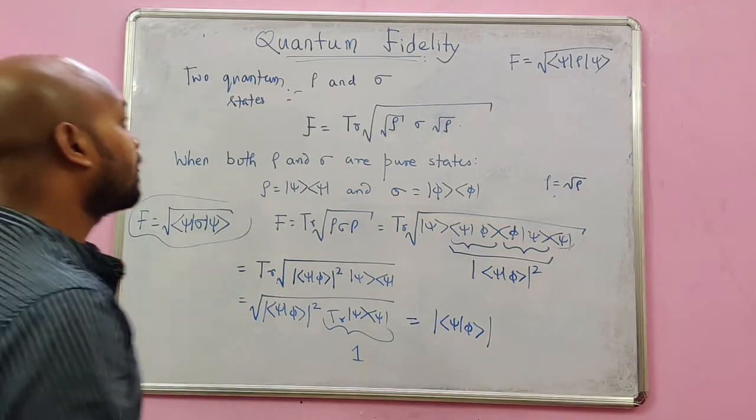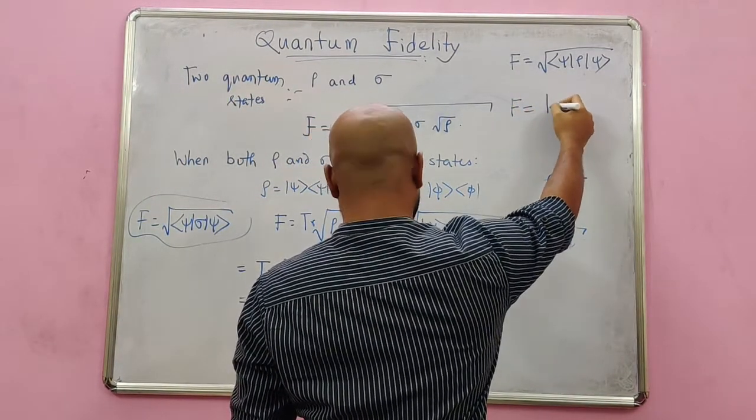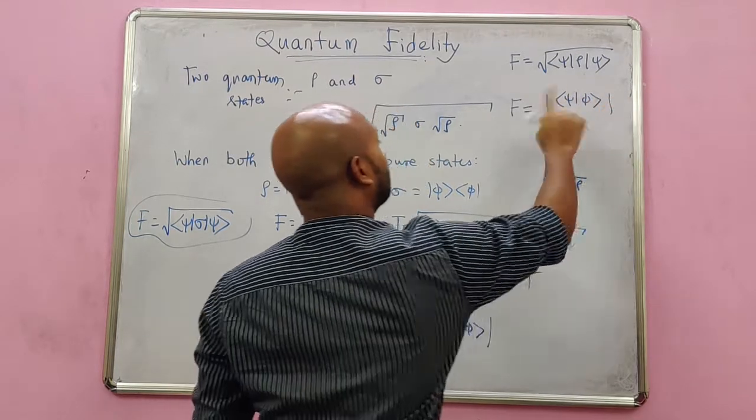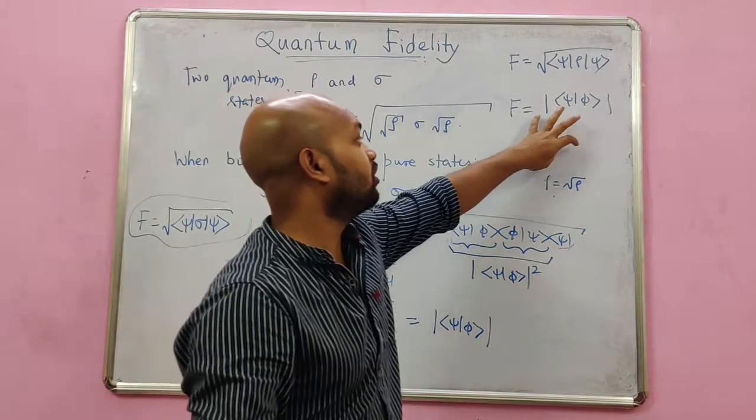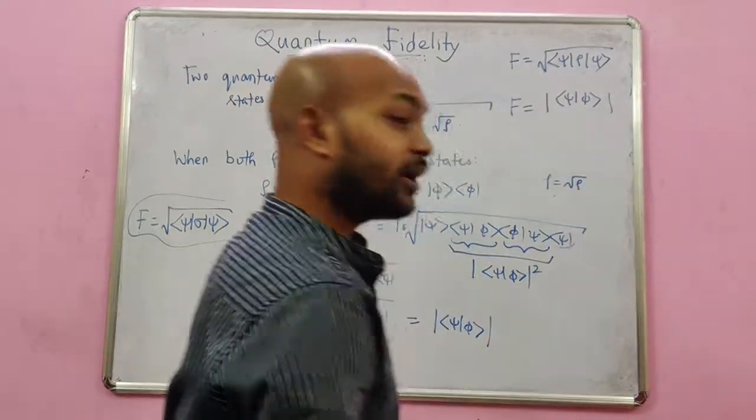So if both quantum states are pure, then my fidelity is the modulus which is simply the inner product of them, and this is what you mean by overlap - the usual vector projection.